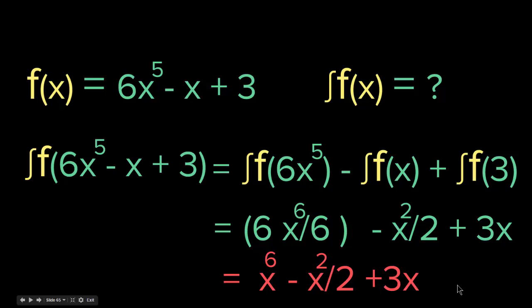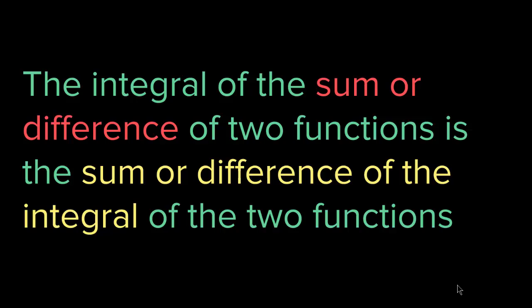So basically, this is the sum or difference rule. The integral of the sum or difference of two functions is the sum or difference of the integral of the two functions. When you have a string of functions with summation or subtraction, you take the integration of each function and then put the signs in between as in the original function. Let's check out the fourth rule.